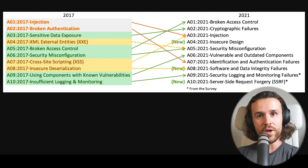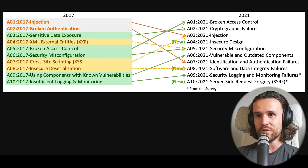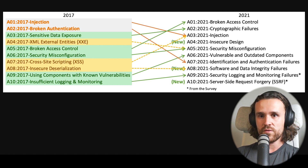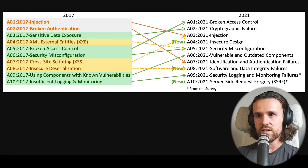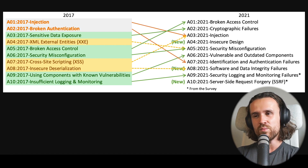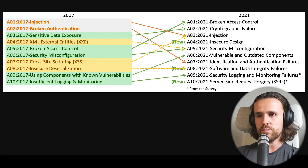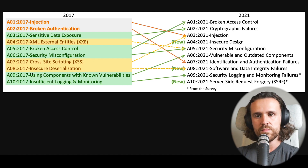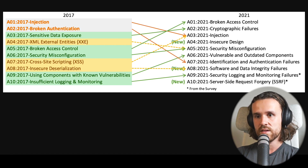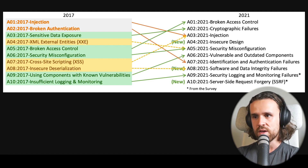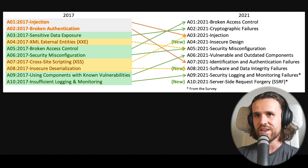Broken access control went all the way up — that is our number one vulnerability in the 2021 OWASP Top 10. Security misconfiguration went from 6 to 5. Cross-site scripting dropped in 2017 to rank 7, but it's been merged into the injection category at rank 3. Insecure deserialization was moved to a new name but stayed at the same spot. Using components with known vulnerabilities moved up from 9 to 6, and insufficient logging and monitoring moved from 10 to 9.